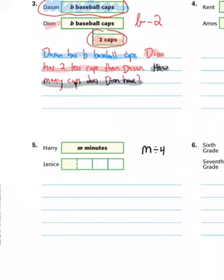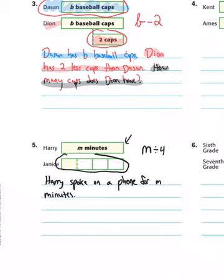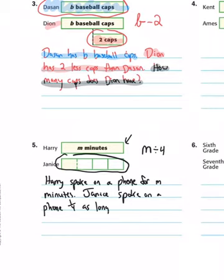Now we're going to write a situation. Something in sentence one has to do with Harry — maybe he spoke on a phone for M minutes. So: Harry spoke on a phone for M minutes. Then for the second part, Janice must have spoken on a phone for one-fourth as long as Harry because her bar is split into four pieces. So: Janice spoke on a phone one-fourth as long as Harry.